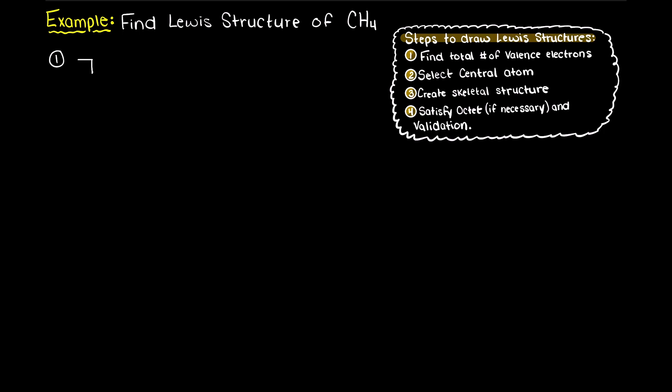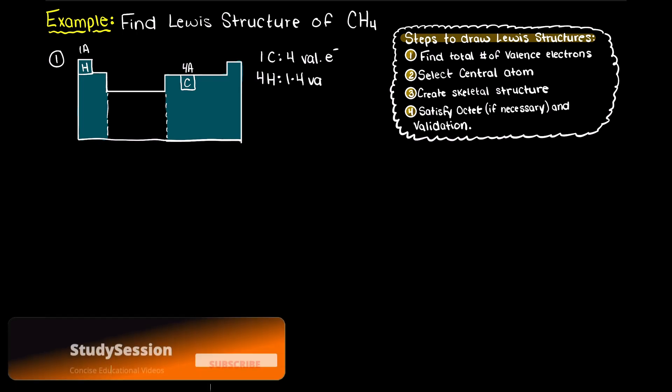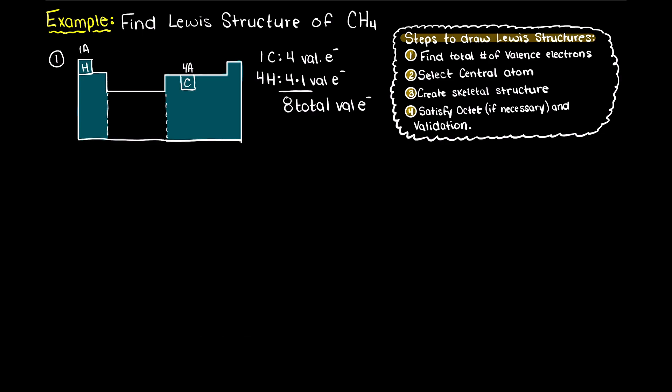First we need to find the total number of valence electrons that are present in our compound. Remember our trick to easily remember how many valence electrons an atom in groups 1a to 7a has: we look at the group number, the column that our atom resides in, and that will tell us the number of valence electrons that atom will have in its neutral state. Therefore, carbon being in group 4a will have 4 valence electrons, and hydrogen being in group 1a will have a single valence electron. Therefore, our total combined valence electrons in our compound is 8.